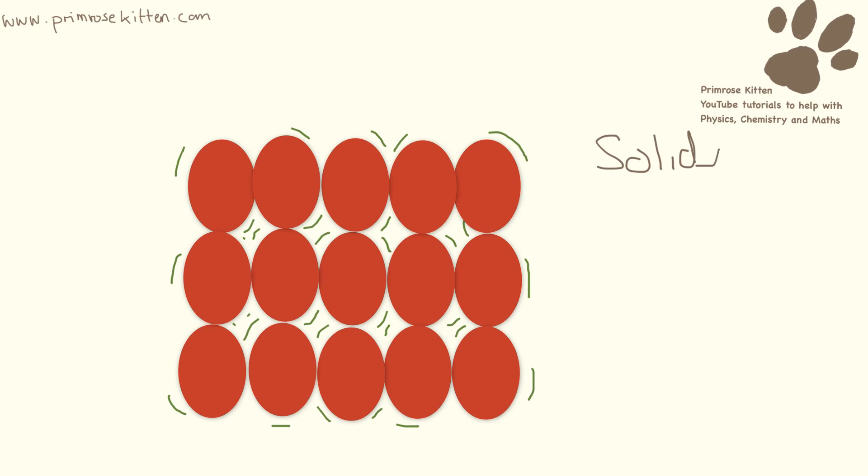So solids, you need to know that they can't flow. They have a fixed volume. They have a fixed shape. Solids are very close together with very small gaps in between them, so not a lot of space for them to be squashed, which is why they have a fixed volume and fixed shape.